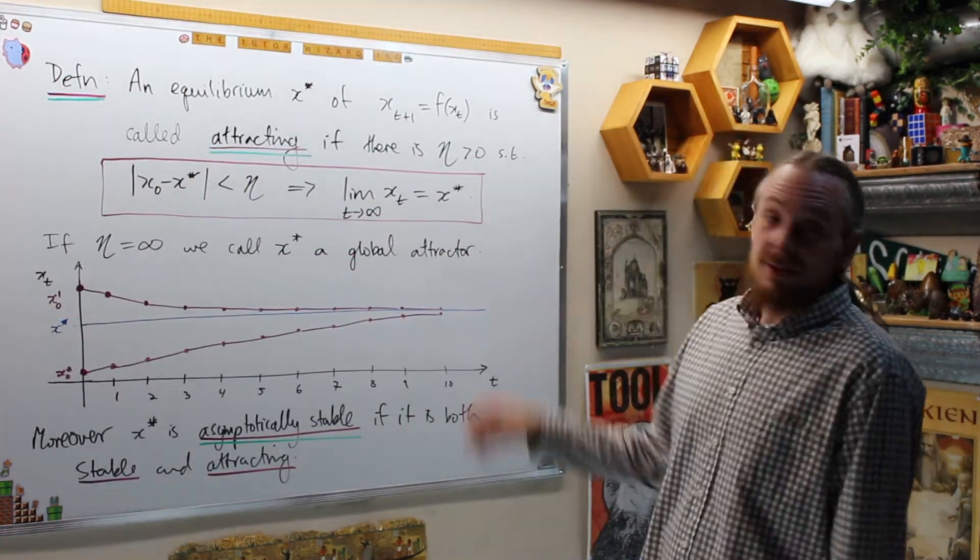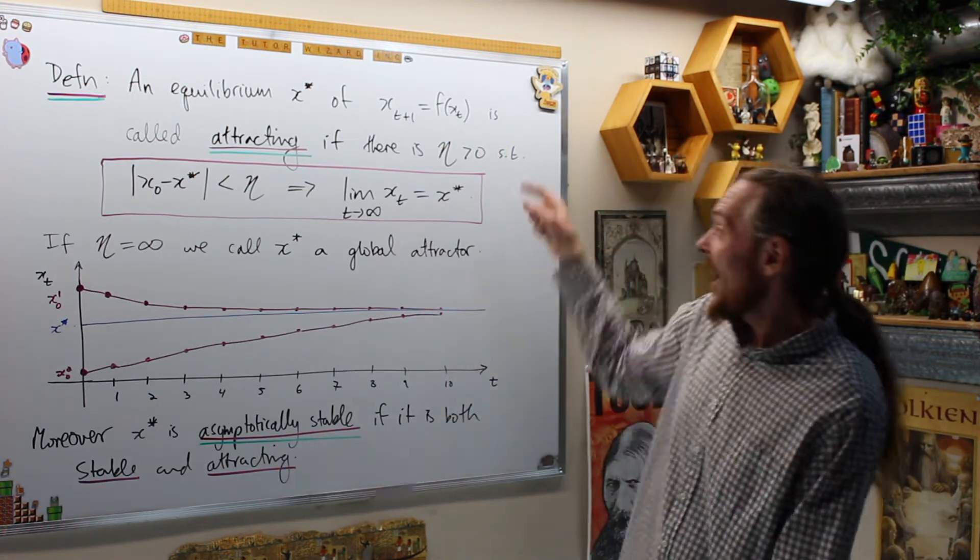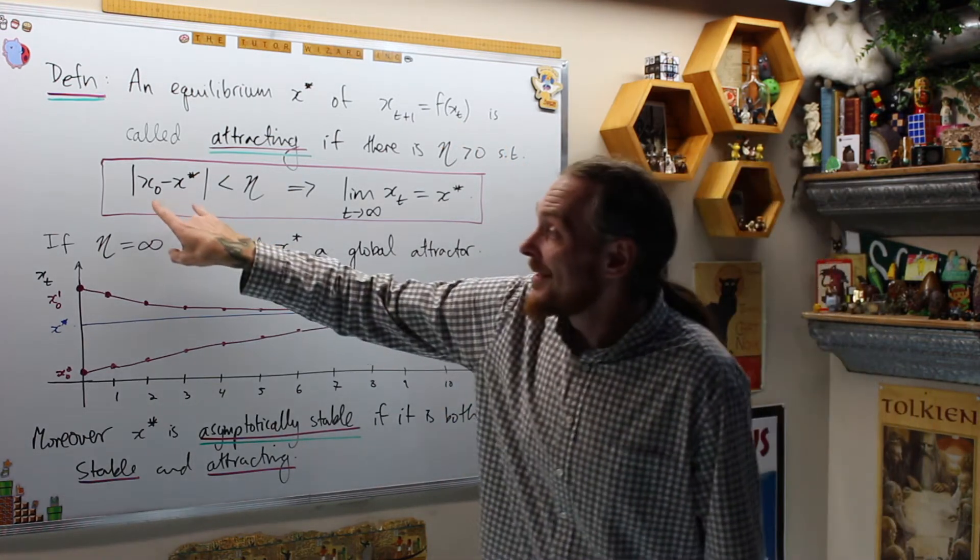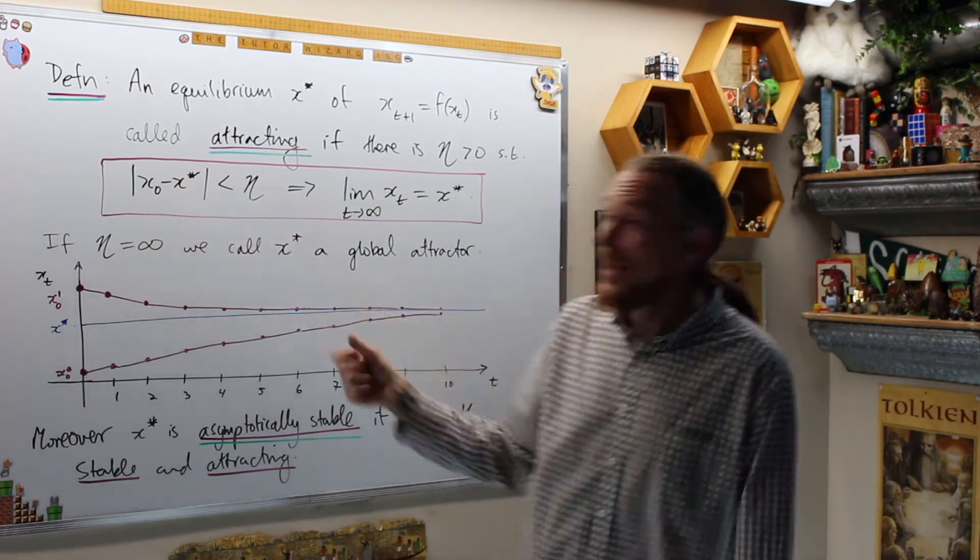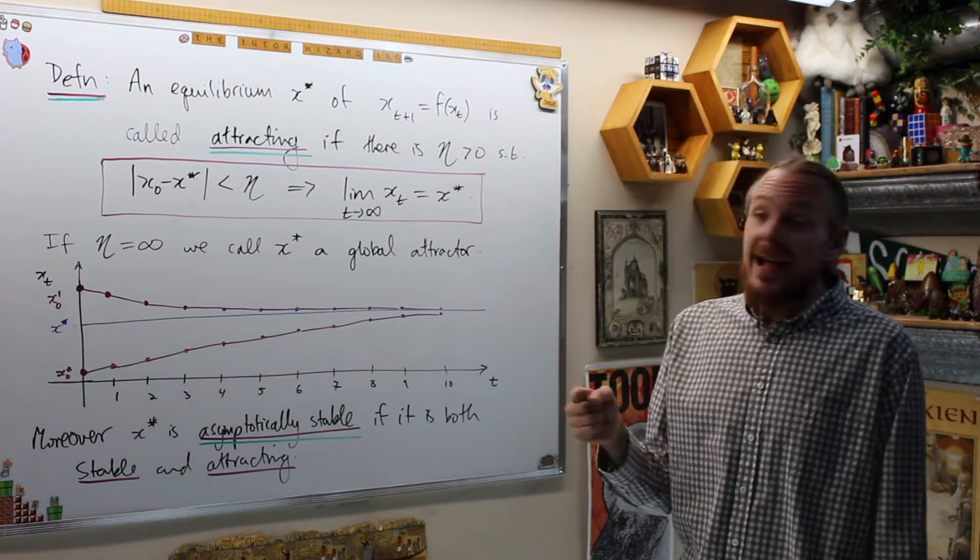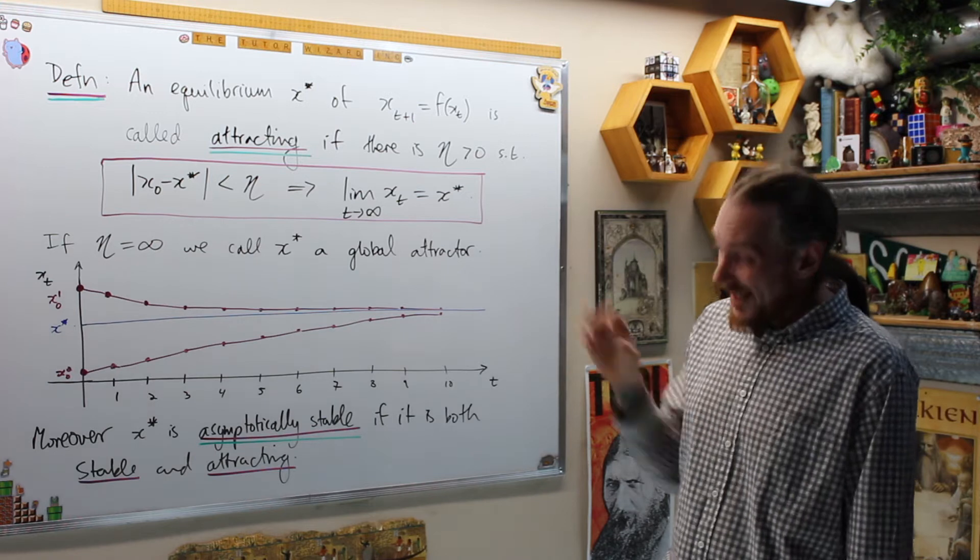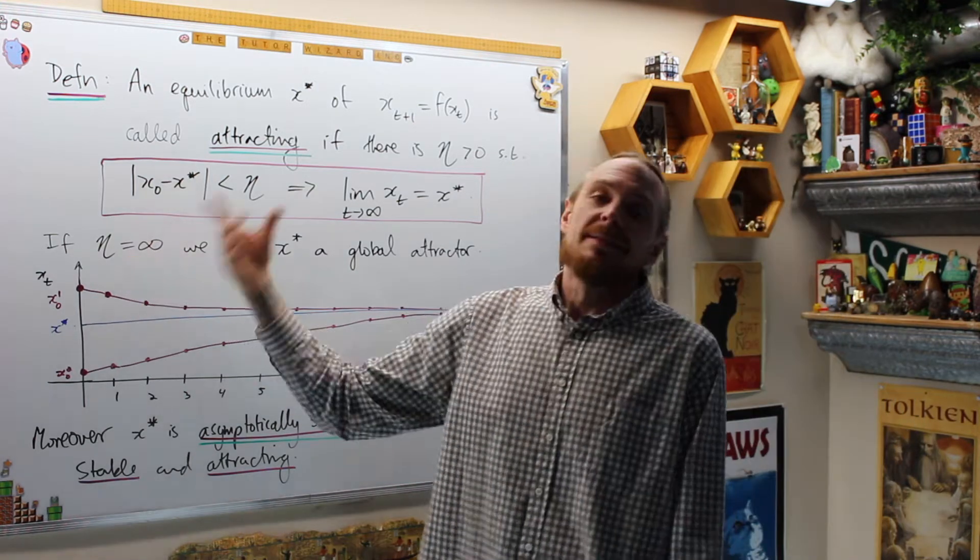Alright, now an equilibrium x* of this difference equation is called attracting if there is some eta greater than zero, such that if the distance between x_0 and our equilibrium x* is within a distance eta, then that implies, in fact, that the limit of our x_t's is, in fact, our equilibrium x*. So it actually is converging there.